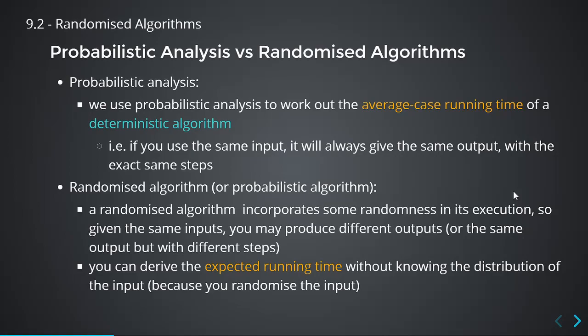What we're doing now is using something called a randomized algorithm, where the randomness is part of the algorithm. So if you get the same input, you may actually get a different number of steps. For example, if I start the FindMax algorithm and the first thing I do is randomize the array, then every time I run it, I'll get a different number of assignments. So you can't derive the average case running time. What we get instead is the expected running time.